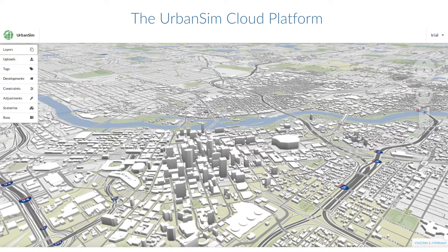Today, more than half of the world's population now lives in urban areas. Computer-based land use models such as UrbanSim can be used to forecast the future of cities and to construct what-if scenarios to help inform policy. Tools are needed for modeling long-term changes in the spatial distribution of demographic and economic activity over time, and also to look at the associated changes in travel patterns.